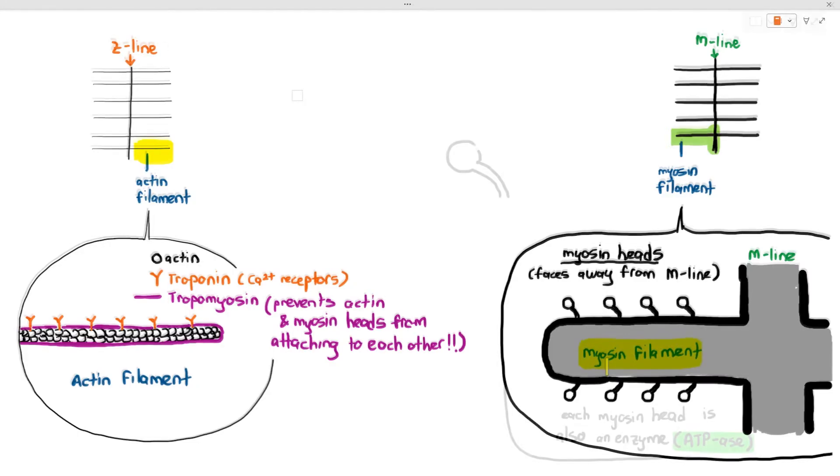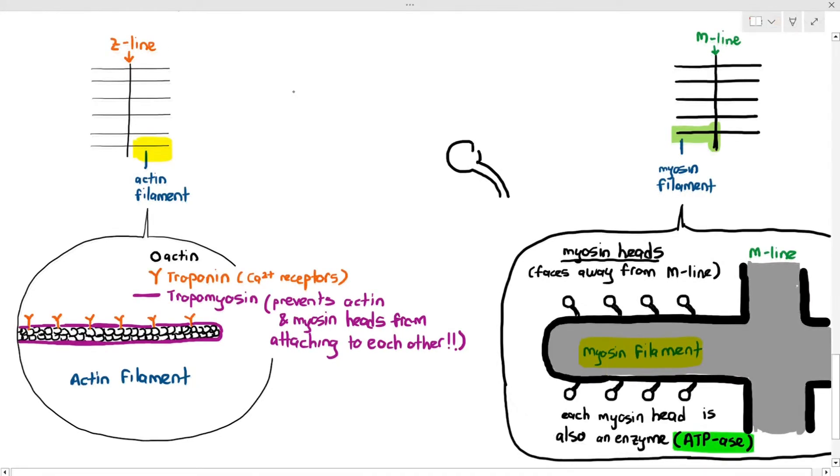Another thing we have to mention is the myosin head also has this particular characteristic where even though it looks like a globular structure is like a head and it has something to do with the actin filament later, they can act as enzymes too.